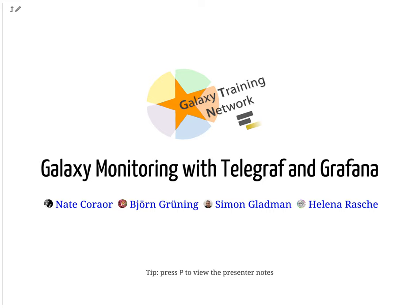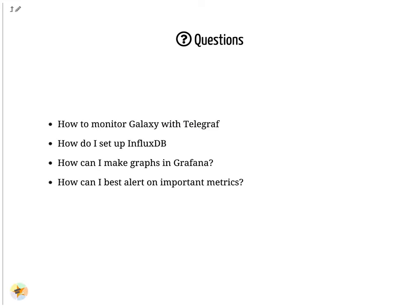Galaxy monitoring with Telegraf and Grafana. How to monitor Galaxy with Telegraf? How do I set up InfluxDB? How can I make graphs in Grafana? How can I best alert on important metrics?